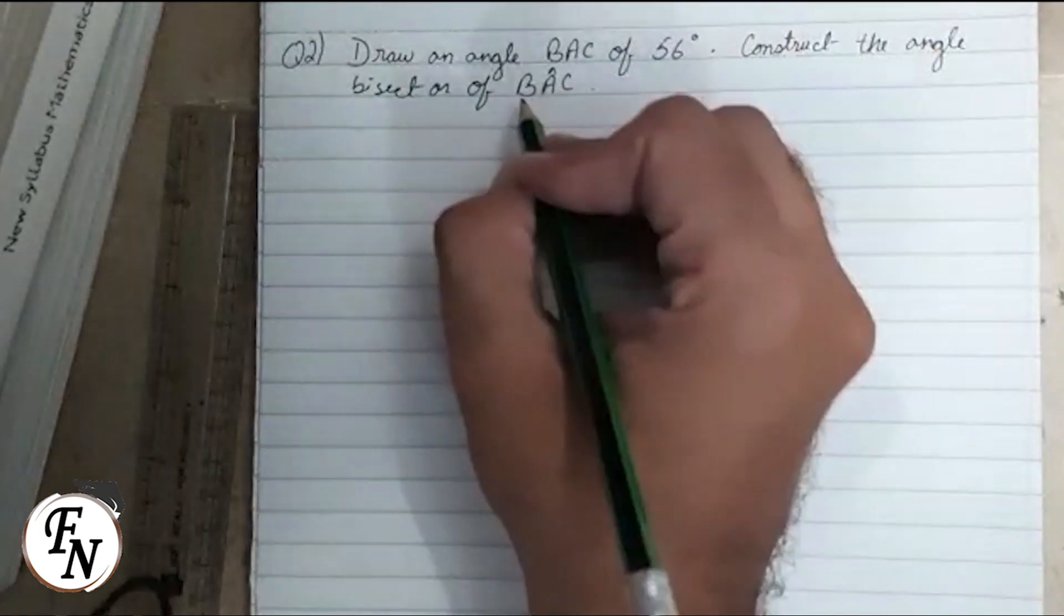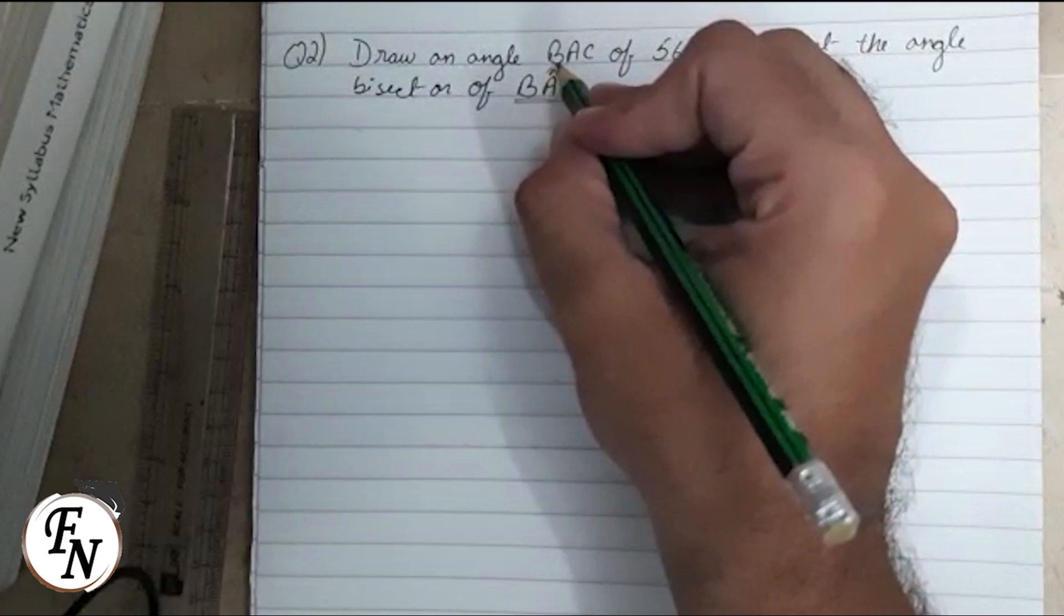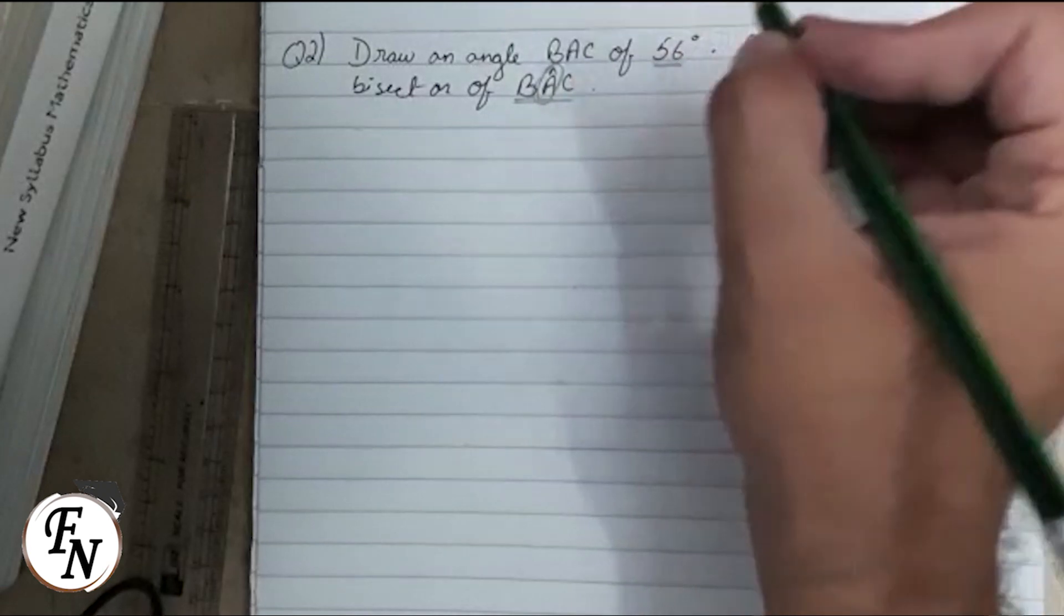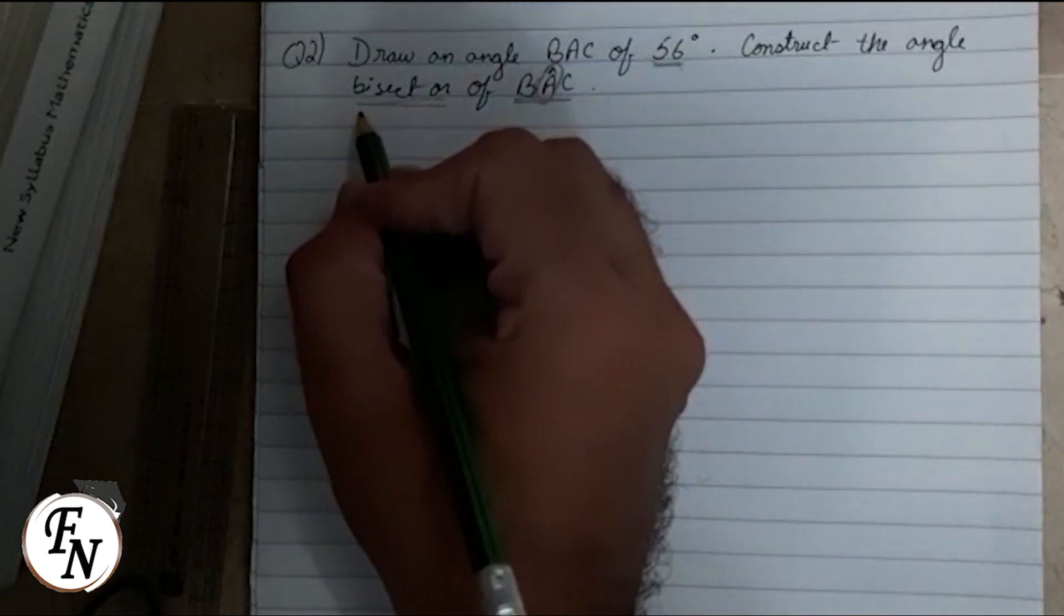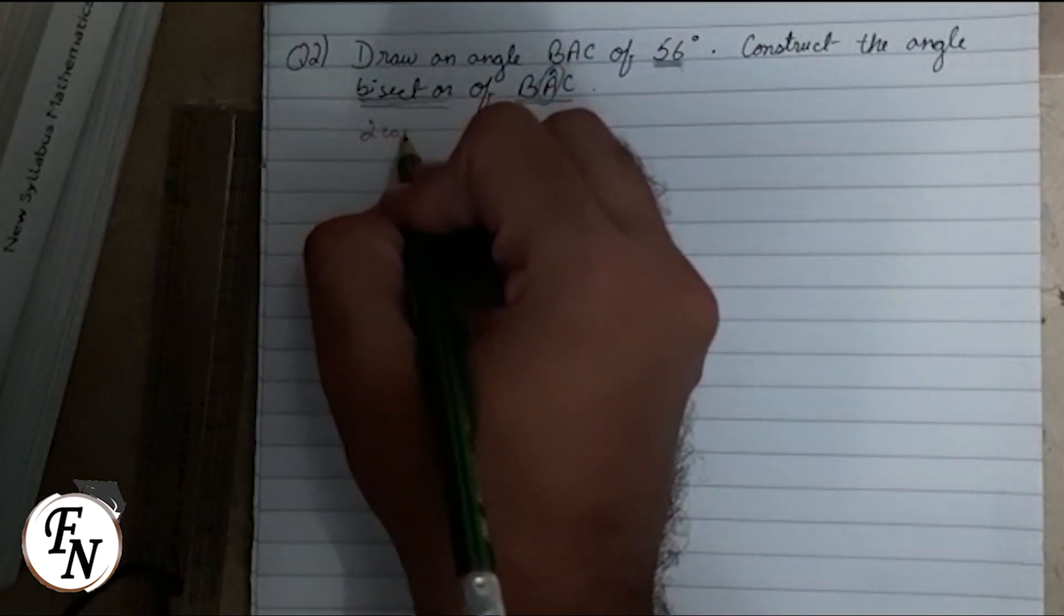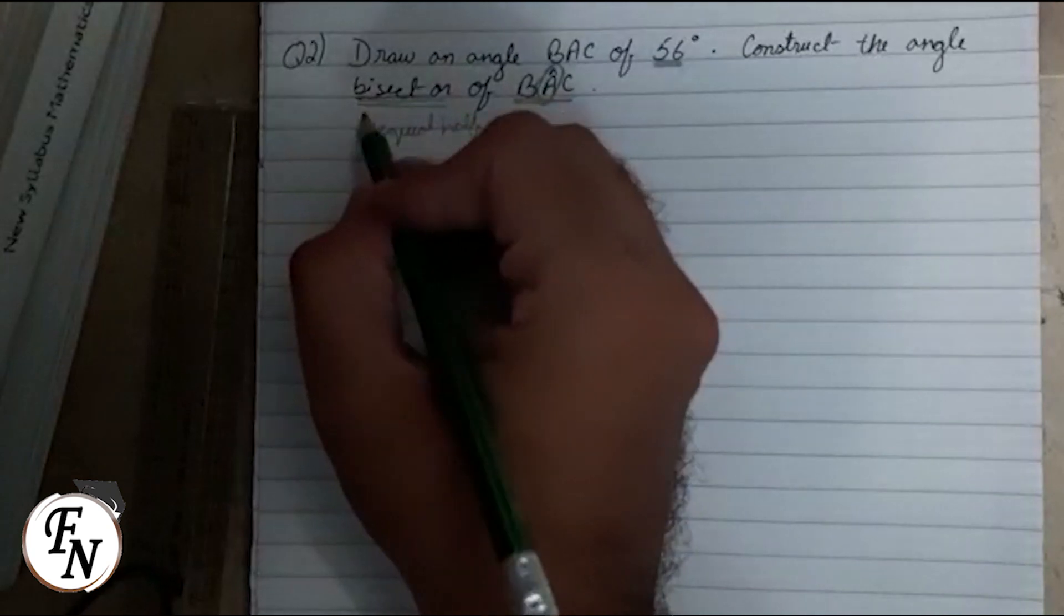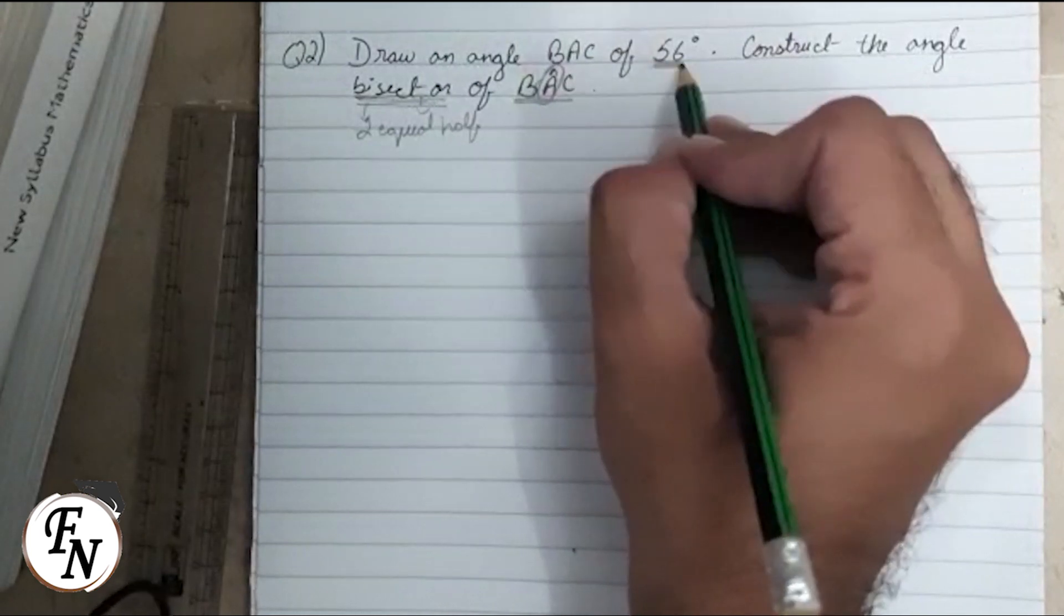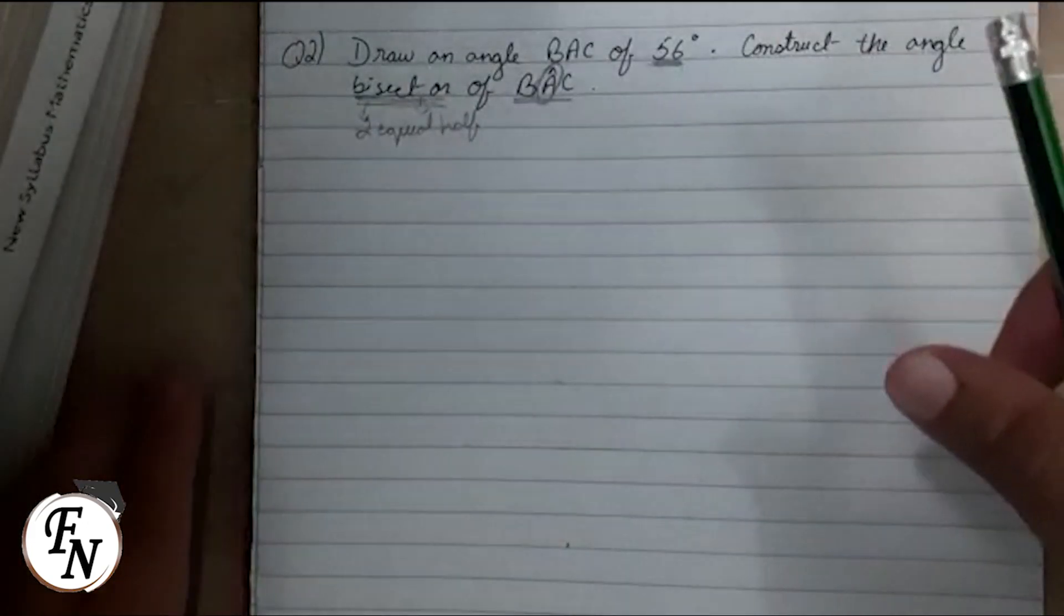First of all, we need to understand that in BAC, the center alphabet A is where we will draw the angle which is 56 degrees, and then we need to bisect that angle. That means we should divide this angle into two equal halves. Bi means two and sector means equal halves, so we will first draw an angle of 56 degrees and then divide it into two equal halves.